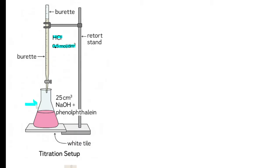Then here we have a conical flask. This contains 25 cubic centimeters of sodium hydroxide solution mixed with a few drops of phenolphthalein indicator. The solution appears pink in alkaline conditions.